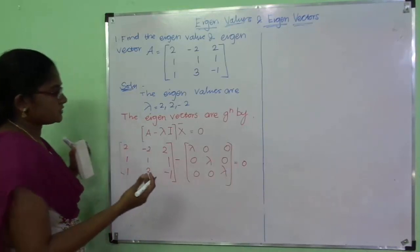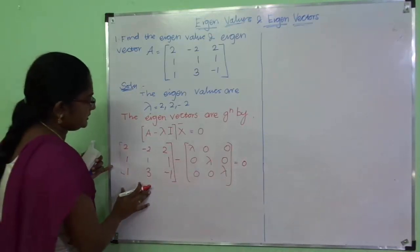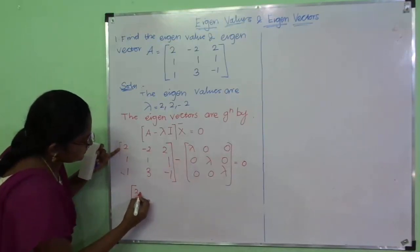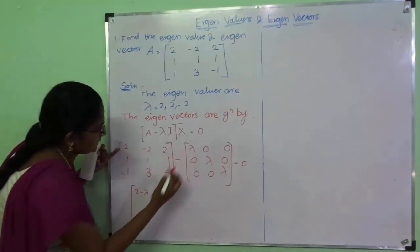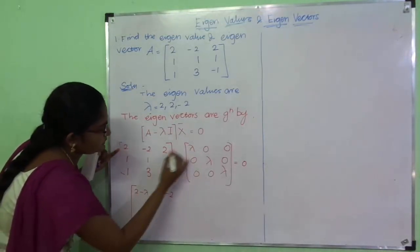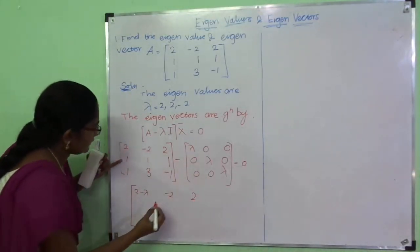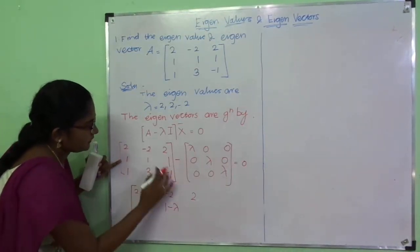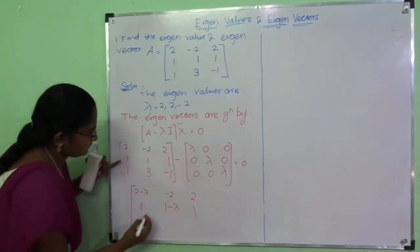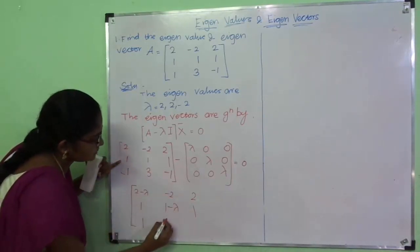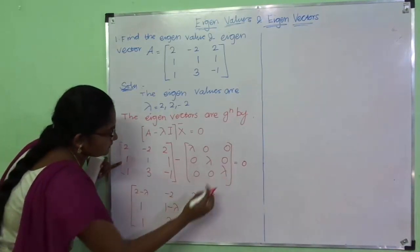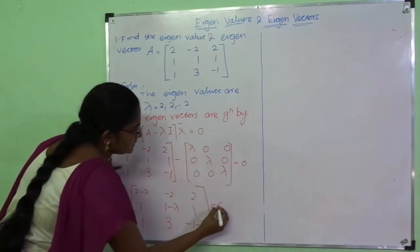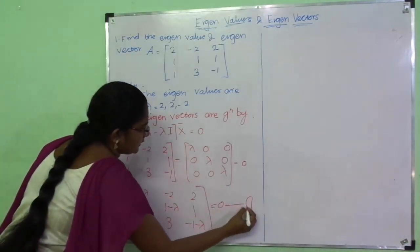Now we are going to subtract lambda I from A. The result A minus lambda I is: [(2 - lambda), -2, 2; 1, (1 - lambda), 1; 1, 3, (-1 - lambda)] which is equal to 0. This is equation 1.